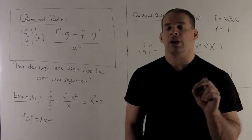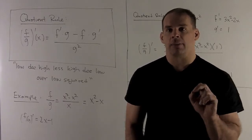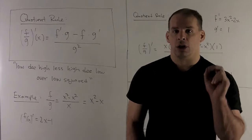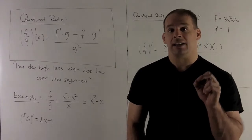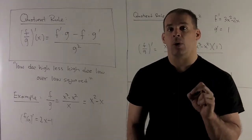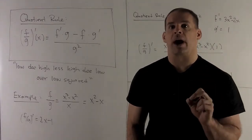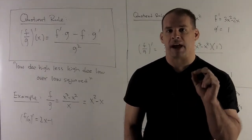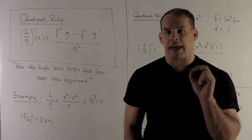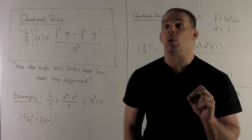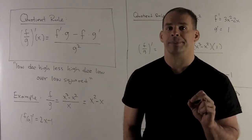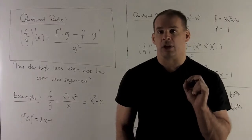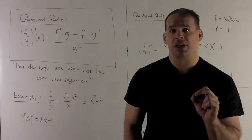There's a little sing-song mnemonic that goes with this: 'low d high, less high d low, over low squared.' Say that like five times every night before bed and it'll sink in quick. Now let's look at some examples to see how it works, and then we'll do more abstract things.